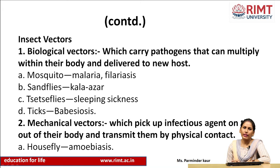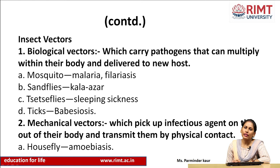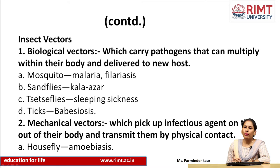Insect vectors are of two types: biological and mechanical. Biological vectors carry pathogens that multiply within their body and deliver them to a new host — examples are mosquitoes in malaria and filariasis, sandflies in kala-azar (which causes blackening of the skin), tsetse flies causing sleeping sickness (extreme weakness and sleeping at unusual times), and ticks. Mechanical vectors pick up infectious agents on the outside of their body and transmit them by physical contact — for example, house flies pick up infection from contaminated areas and transmit it to food sources.